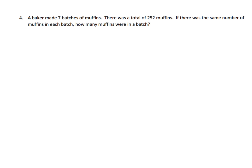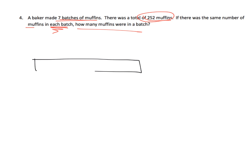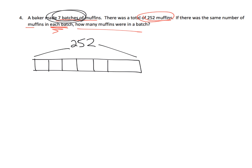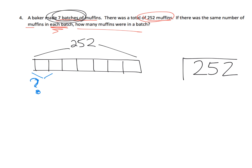A baker made seven batches of muffins and there was a total of 252 muffins. If there was the same number of muffins in each of those seven batches, how many muffins were in a batch? The tape diagram represents the total of 252 muffins, and we know there are seven batches, so we cut it into seven groups. Each one of those units represents a batch of muffins, and the question is how many muffins are in one batch. So our division problem is 252 divided by 7. Parents and teachers, I'll leave it to you to show the division — the important thing here is what the tape diagram looks like.